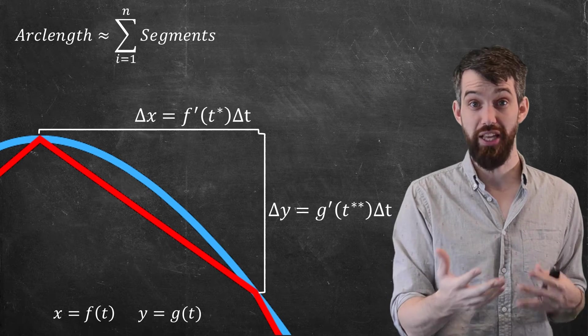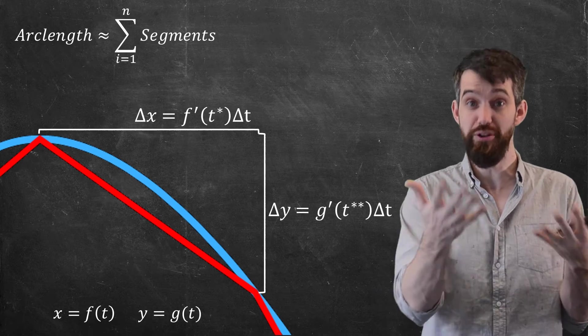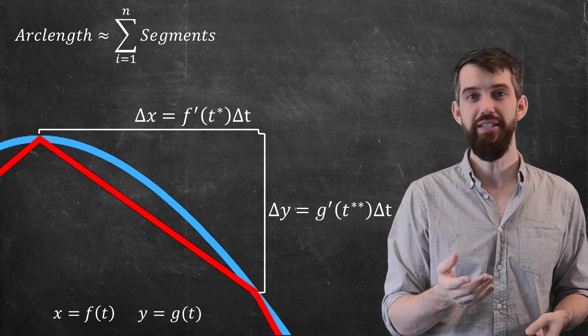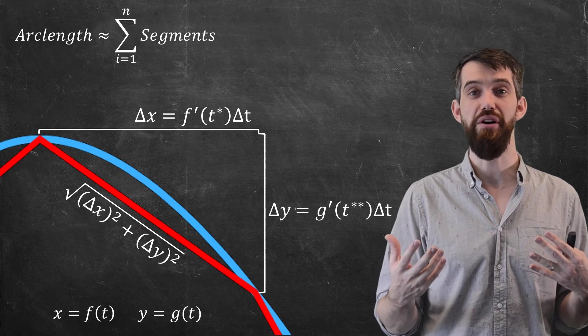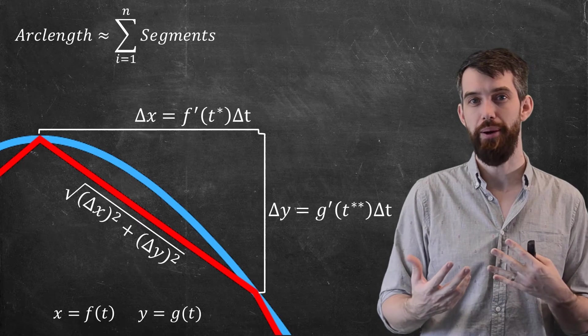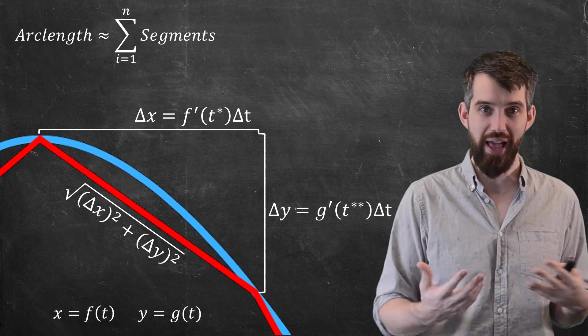Now, the thing we actually care about is the red line here. We want to know what this straight line we're trying to approximate. This is nothing but, by Pythagoras, the square root of delta x squared plus delta y squared. So that's what I'm going to put in for the length of my little line segment.